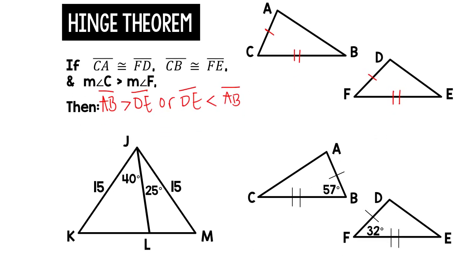Let's try that out. In triangle KJM, JK is 15 and JM is 15, so those sides are the same, and JL is also congruent. So we've got two congruent sides on two triangles. The included angles: angle KJL is 40 and angle MJL is 25. Since 40 is greater than 25, segment KL will be greater than segment LM, or segment LM will be less than segment LK.